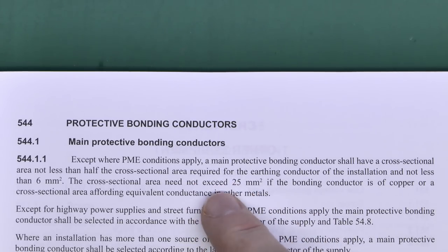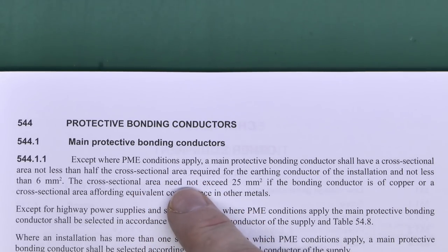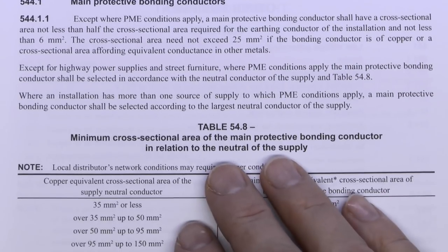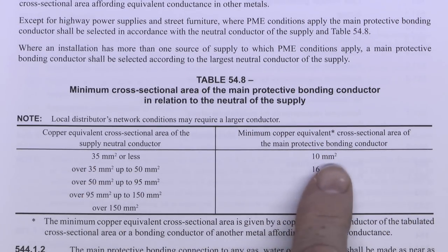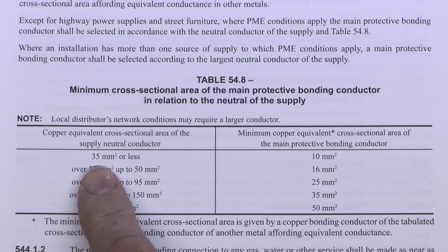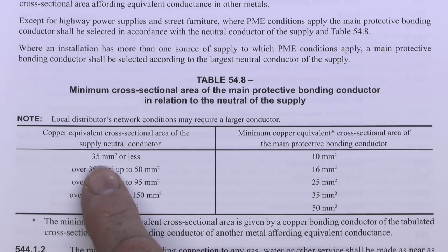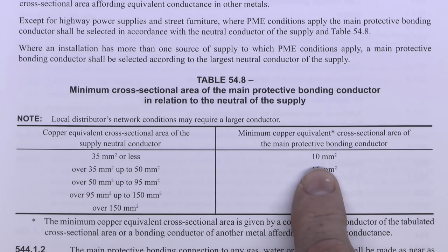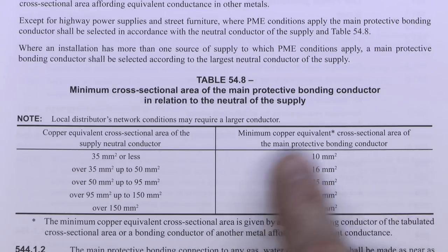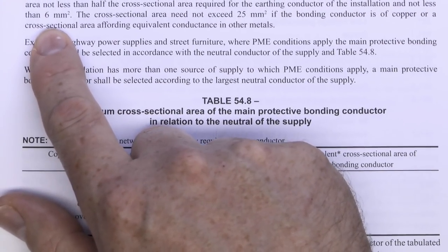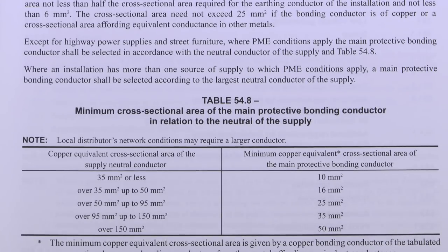This only applies to non-PME supplies, so essentially TNS and TT supplies. In the event of a PME supply, which is generally the TNCS arrangement, you select from a table where the minimum size is 10mm² for supplies up to 35mm² or less — and as the supply size increases the minimum size increases also. For a domestic property it's highly unlikely to have a supply above 35mm², so 10mm² is generally the standard size used. It generally ends up as 10mm² since it's more convenient than buying a separate roll of 6mm².